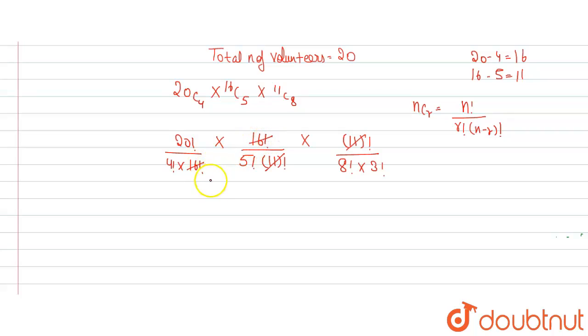The remaining part will come out to be 20 factorial divided by 4 factorial times 5 factorial times 3 factorial times 8 factorial. So this is your answer.